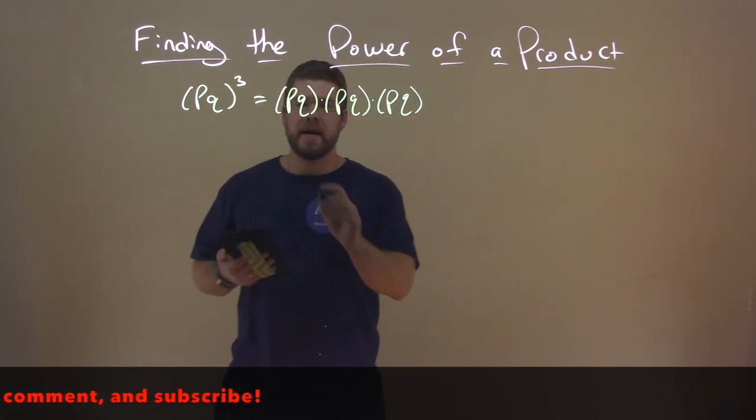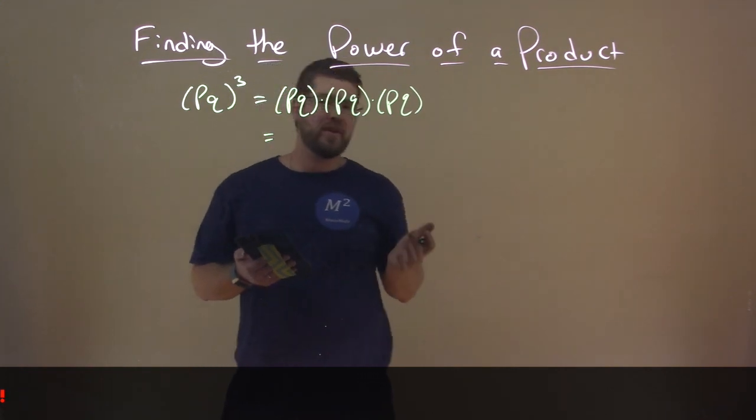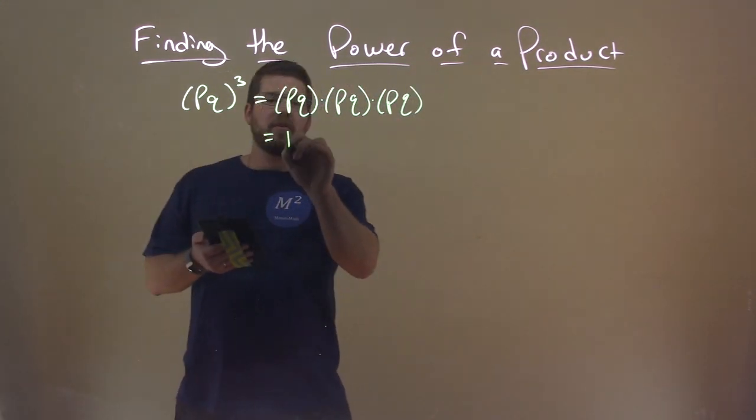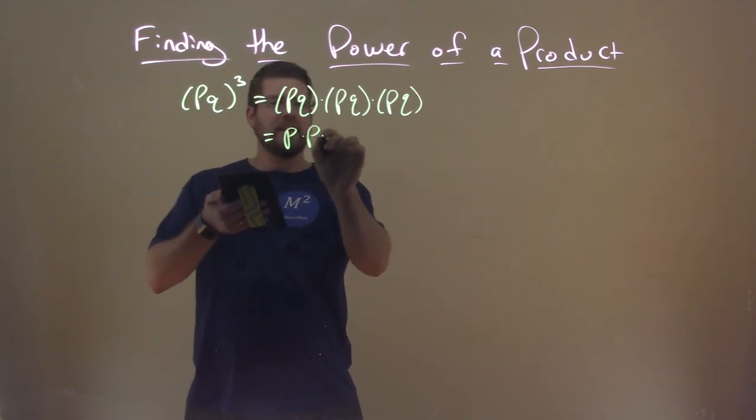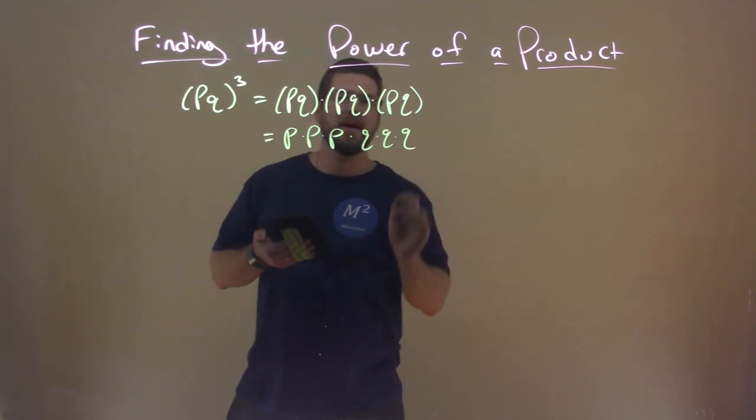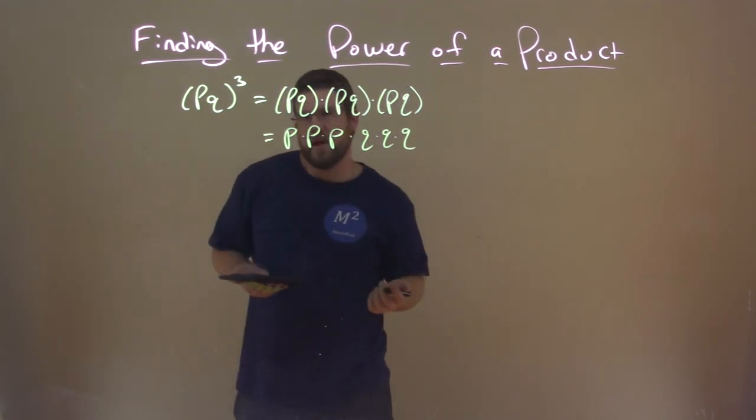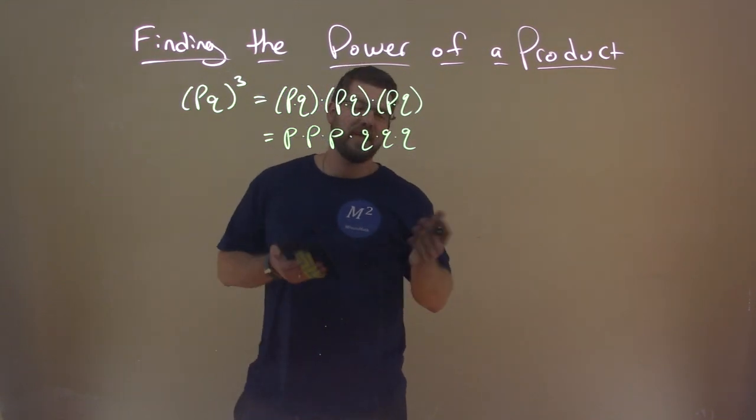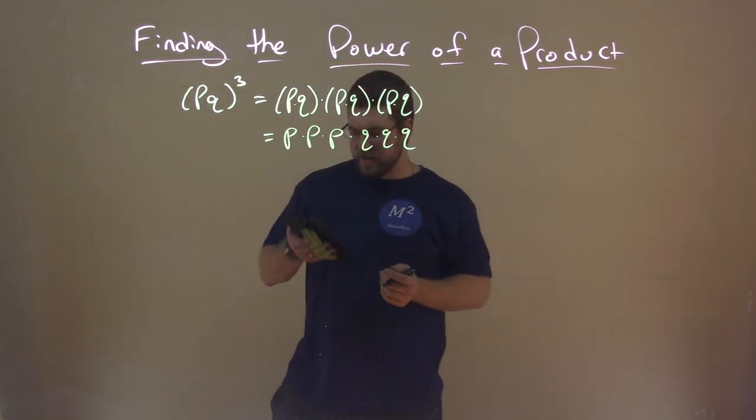So now we can reorganize this, and since it's all really multiplication, let's put our P's together and our Q's together. So we have P times P times P times Q times Q times Q. Now you could show an extra step if you wanted to, showing the multiplication that goes on in between each of those and then reorganizing it, but I think you get the gist.